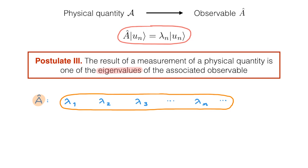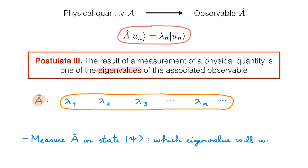The key question becomes: if we measure A in a system in state ψ, which eigenvalue will we get? Postulate 3 tells us that we will get one of the lambdas, but it doesn't tell us which one. For this, we need to look at the next postulate.